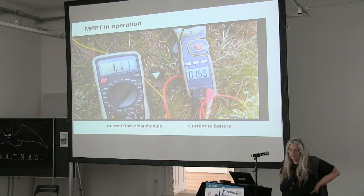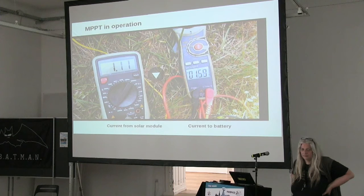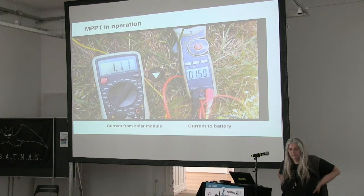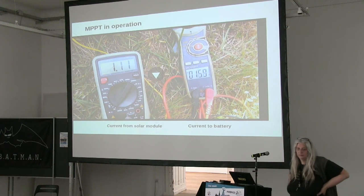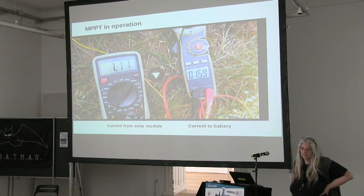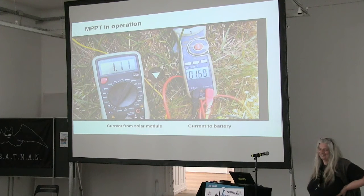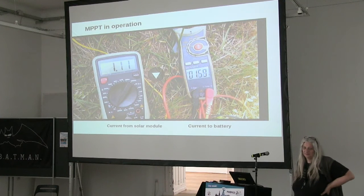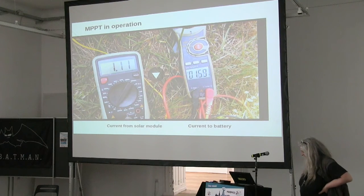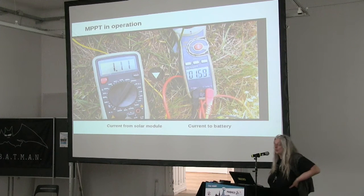An audience member with experience on a sailing boat using three-stage and four-stage systems for three routers points out that without charging power measurement, you can't know the efficiency of the solar cells — for example if birds have fouled the panel and output dropped from 50 watts to 15 watts. Without current measurement, there's no way to know that someone needs to go up and clean it.